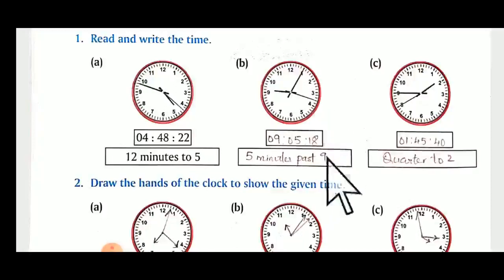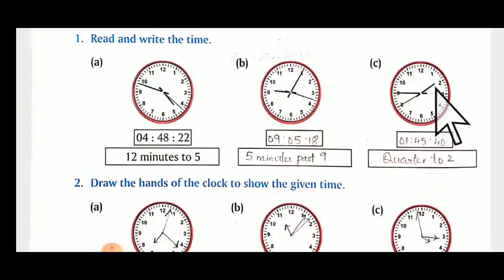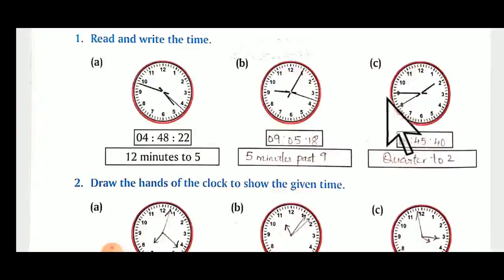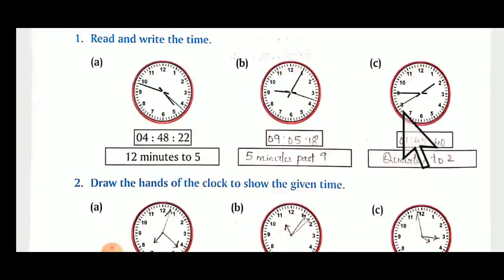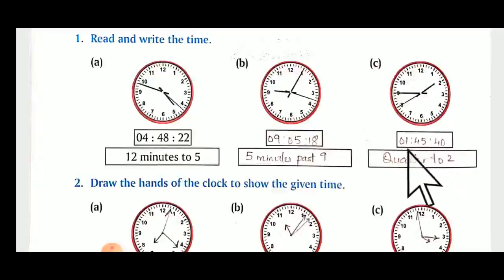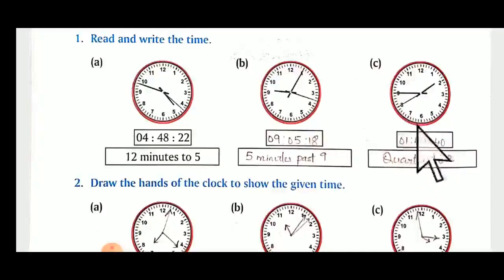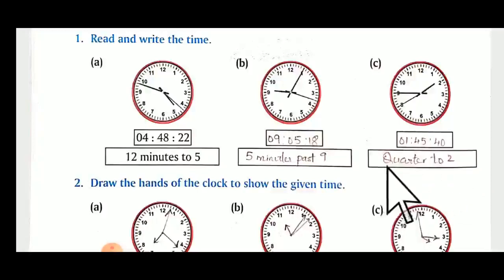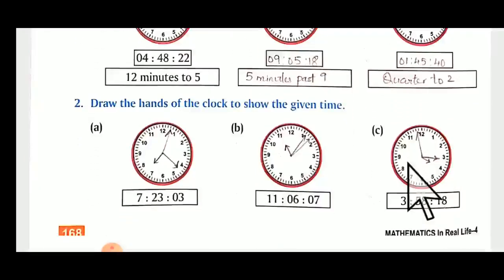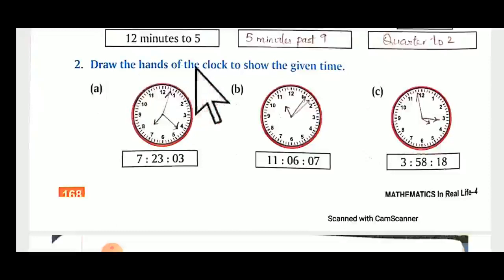C: the shorter hand is between one and nearing two. The minutes hand is towards nine — that will be forty-five. The seconds hand is towards eight — eight fives are forty, so forty seconds. It is one hour, forty-five minutes, and forty seconds. How will you write it? Quarter to two — we don't write fifteen minutes, we use the word quarter for every fifteen.